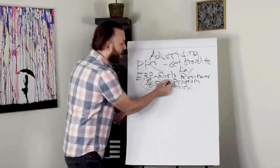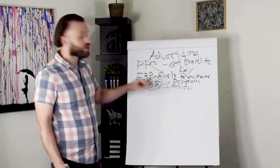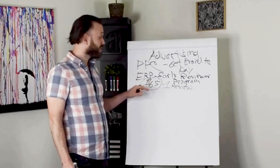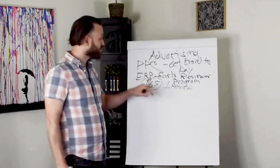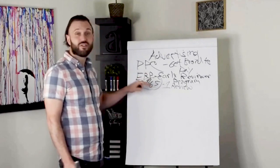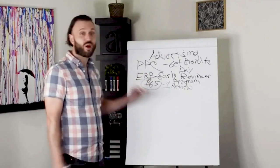Now, something else to keep in mind with the early reviewer program is you're charged this $65 as soon as you get one customer review. So as soon as you get one customer review, you are charged that $65. Now, whether you get one customer review or five customer reviews, the cost is still $65 per SKU, per ASIN, per product.